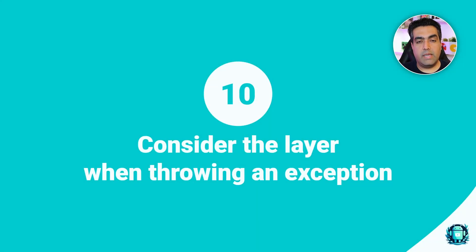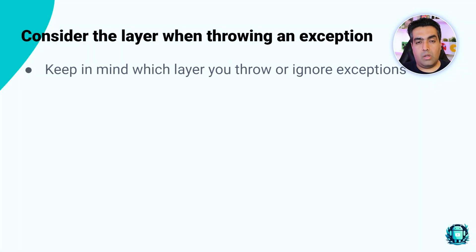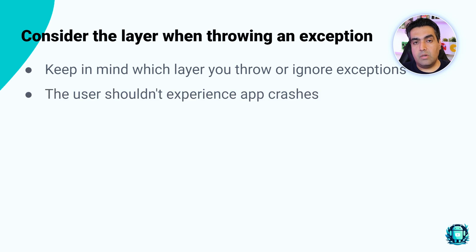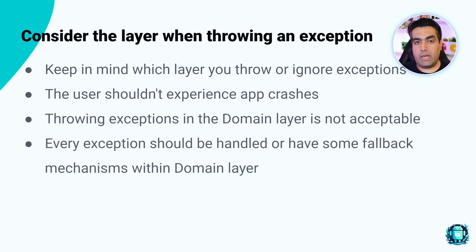Number ten: consider the layer when throwing an exception. Always keep in mind which layer you are throwing or ignoring exceptions in. For a robust application, the user shouldn't experience app crashes, which means throwing exceptions in the domain layer is not acceptable. Everything should be handled within that layer, or have some fallback mechanism in place.